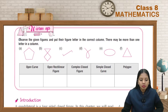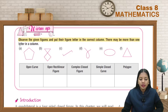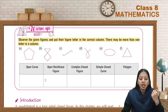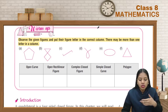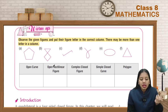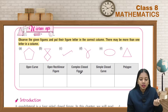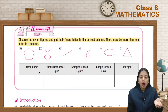Quadrilaterals. Observe the given figures and put their figure letter in the correct column. There may be more than one letter in a column. So if we have some figures given here and a table given here, we have to put a suitable figure under the column. The first column is open curve. Open curve figures will be put here. Then open rectilinear figures — open but rectilinear figures. Then complete closed figures, simple closed figures, and polygon.